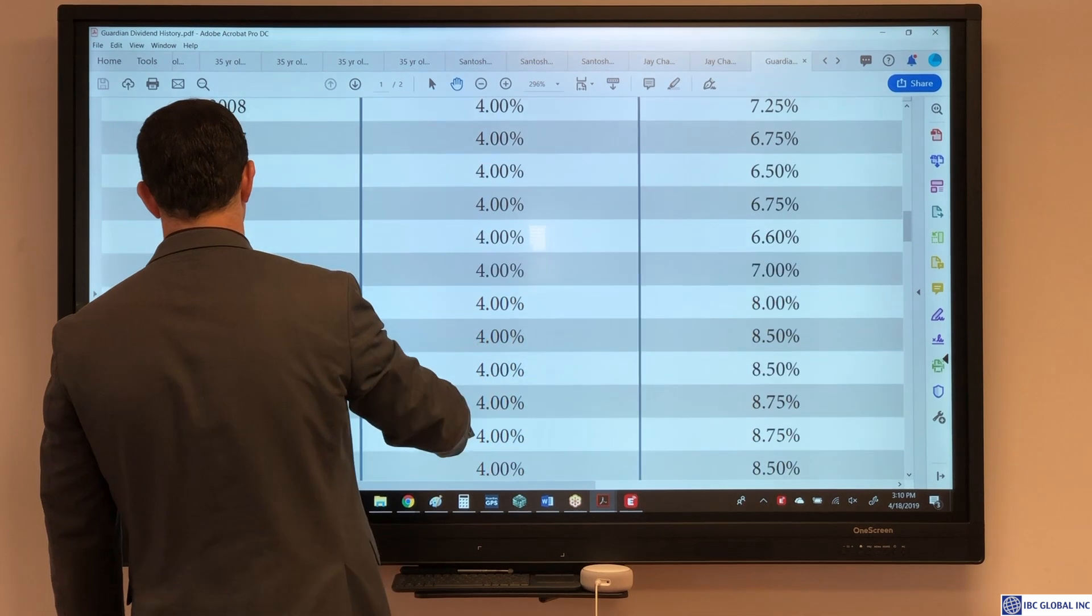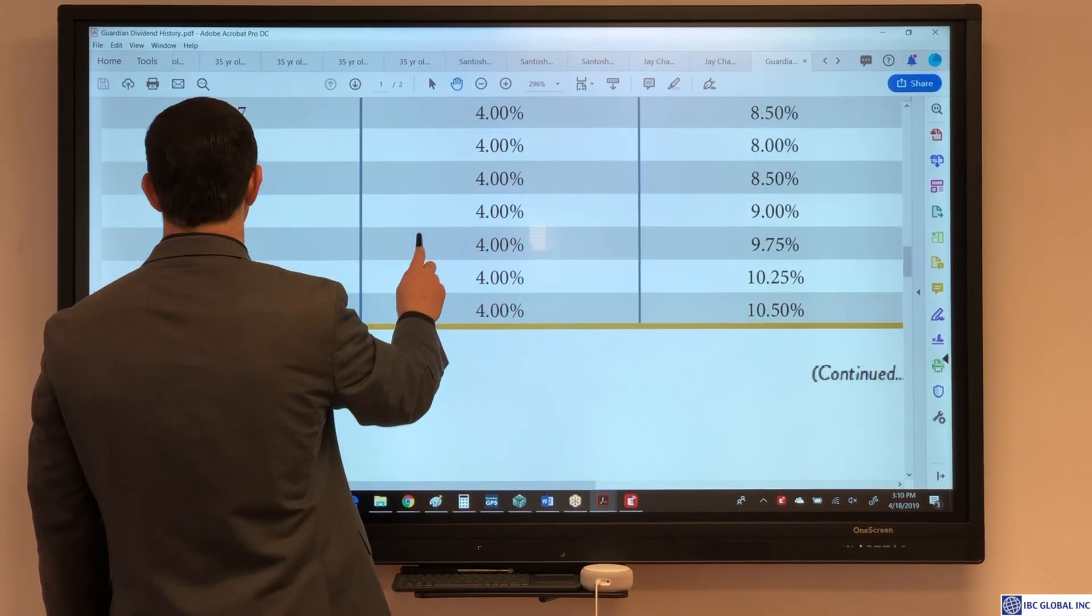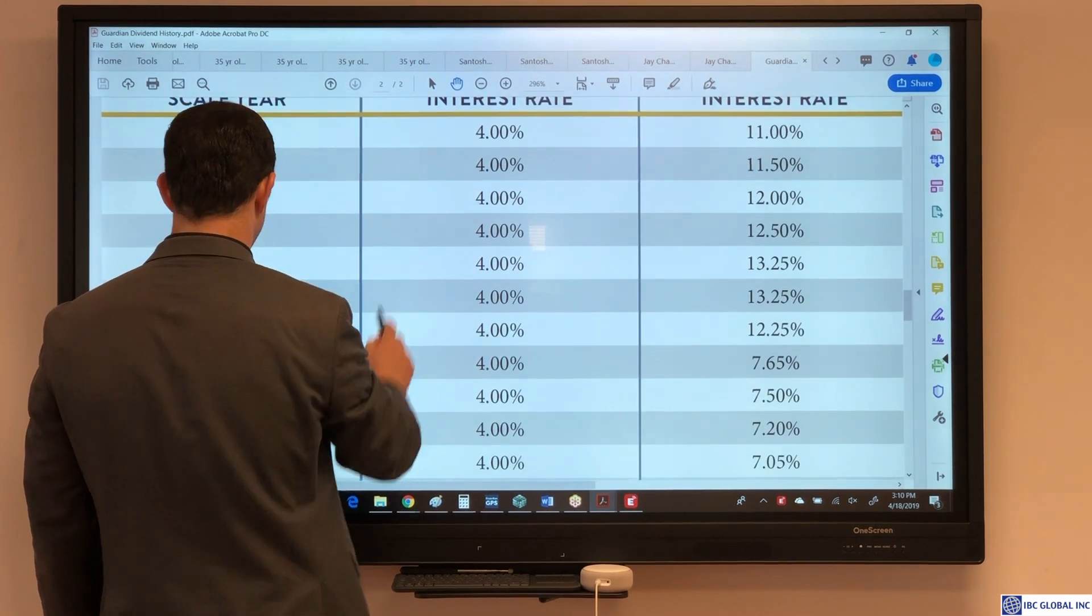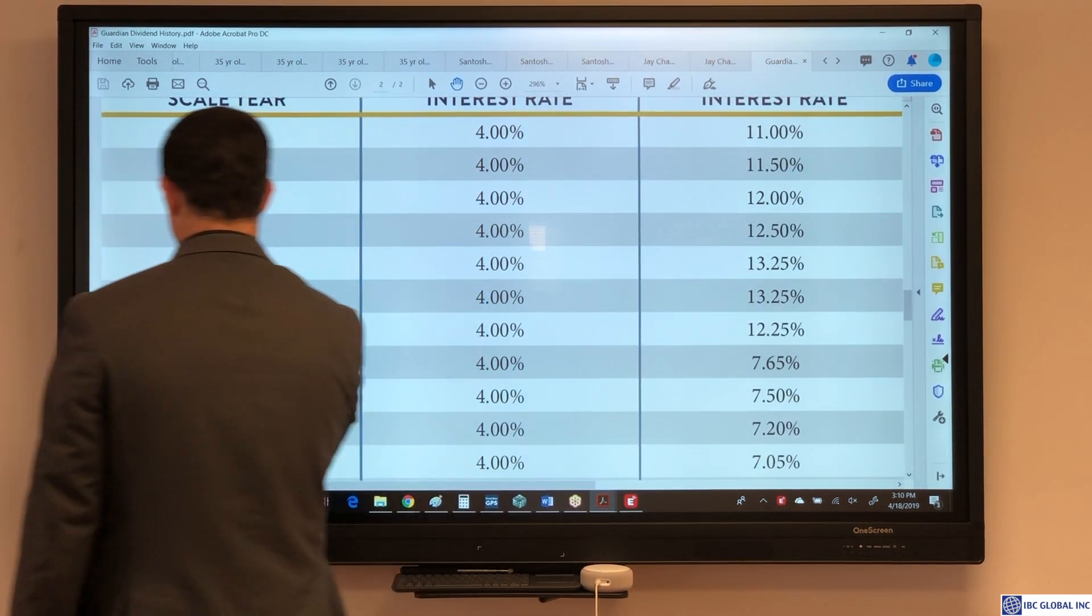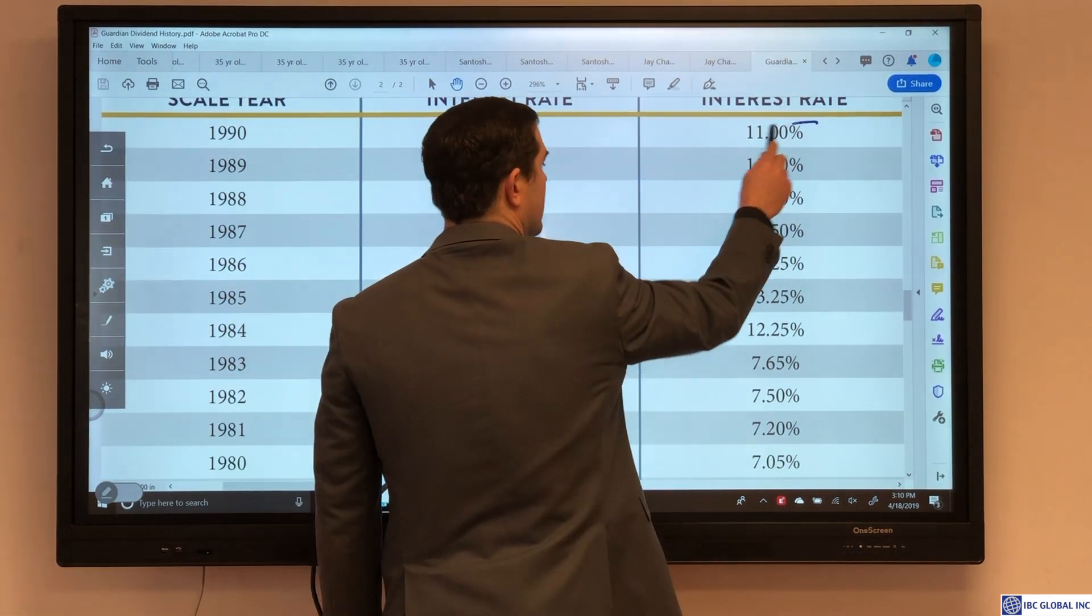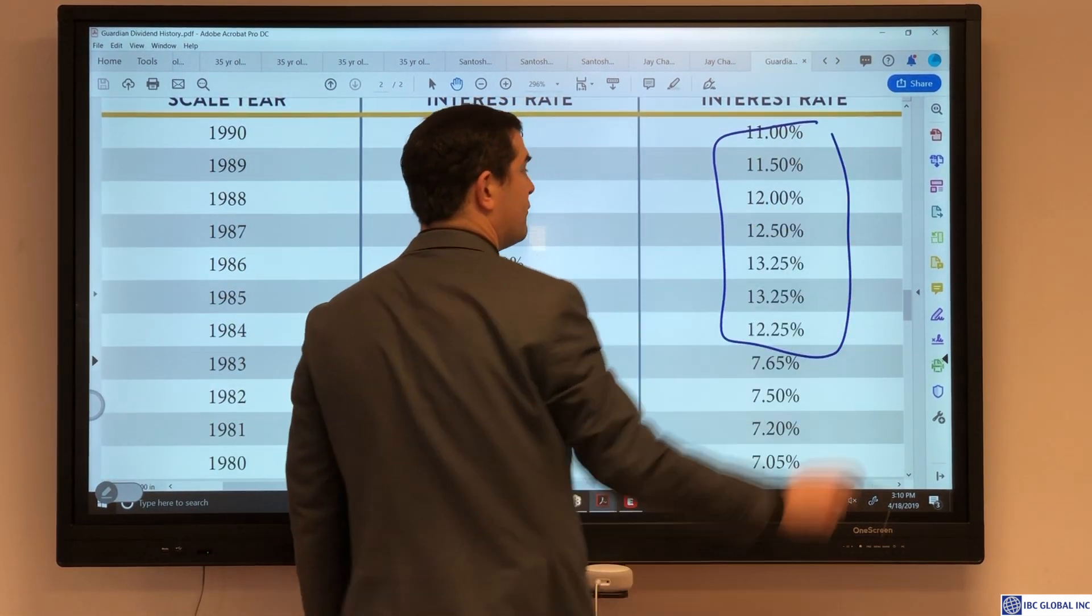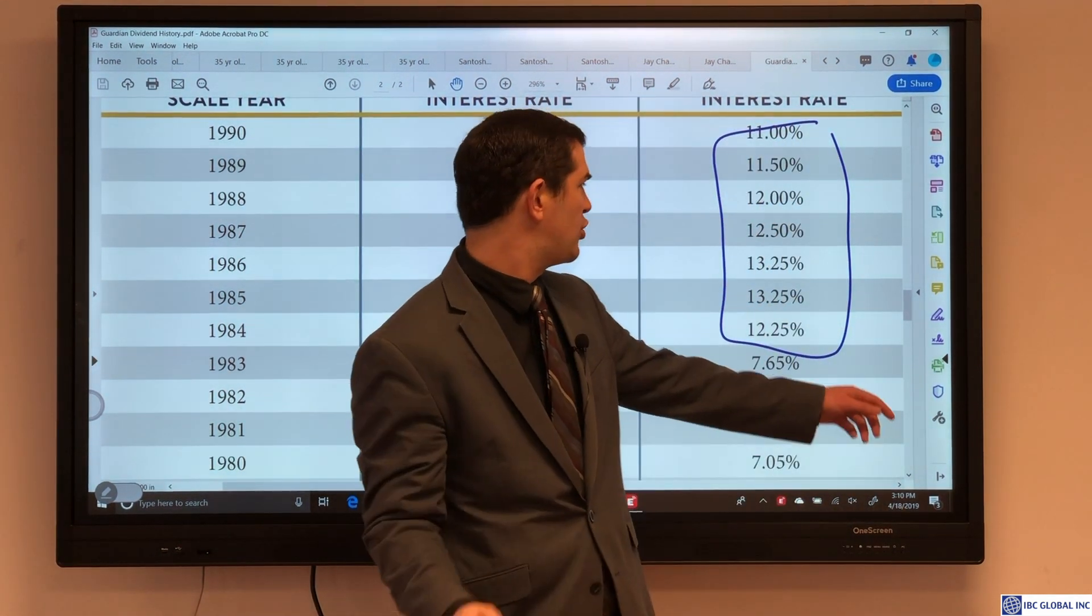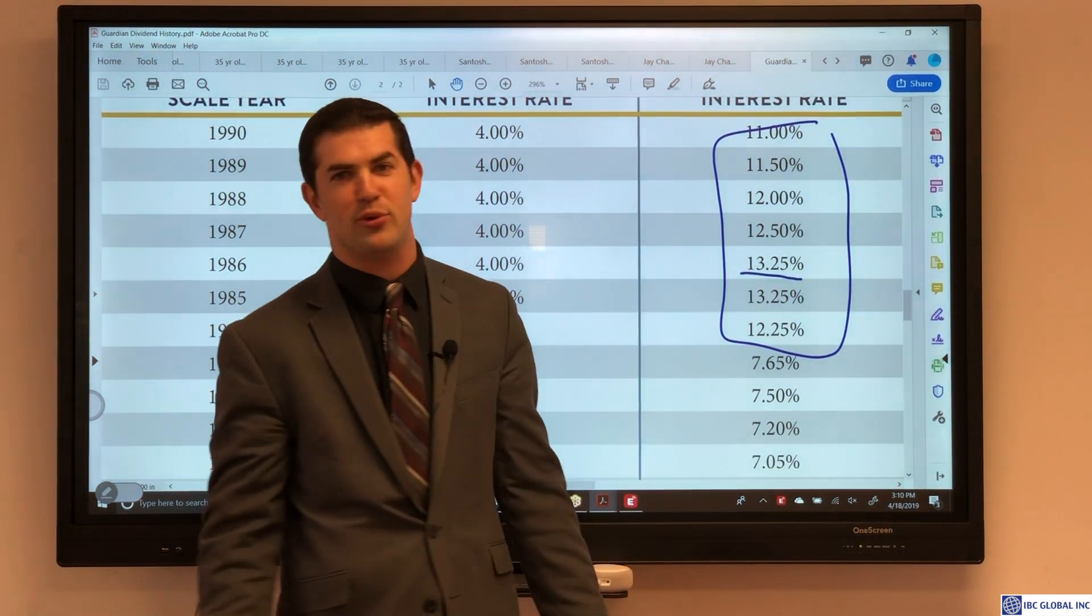Historically, if we go back to when I was a little baby or before I was born in the 80s, you see what here? Double-digit dividend rates. What could we get a mortgage or a CD for back in this point in time? Much higher than what we see here. We see 11, 12, even 13 and a quarter percent at one time.